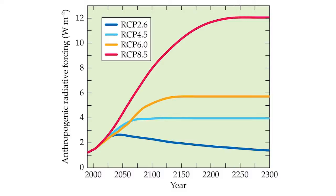While the four RCPs span a wide range of total forcing values, they do not cover the full range represented in the literature. The IPCC considers any of these emission scenarios equally likely. The scenarios are not predictions, but assumptions that the global climate model requires as input.